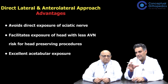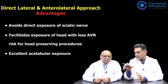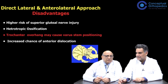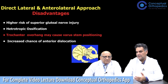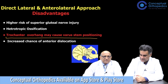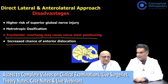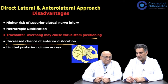The anterolateral or direct lateral approach has the advantage of avoiding exposure of the sciatic nerve, reduced chances of AVN, and easy and comfortable acetabular exposure. For head-preserving surgeries you can perform dislocation without risk of avascular necrosis — a major advantage. The disadvantages are higher chances of superior gluteal nerve injury, heterotopic ossification, trochanteric overhang affecting stem positioning, increased chances of anterior dislocation, and limited access to the posterior column of the acetabulum.